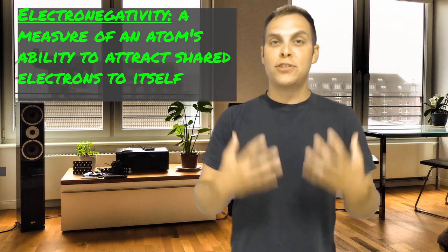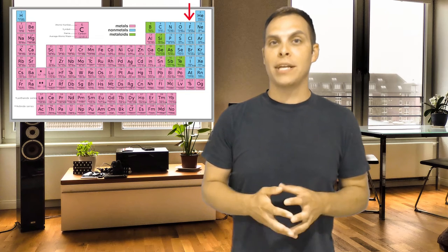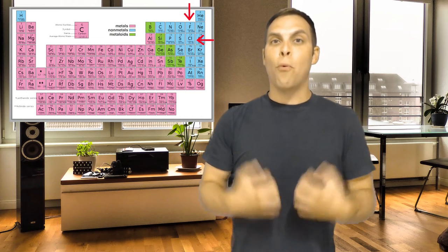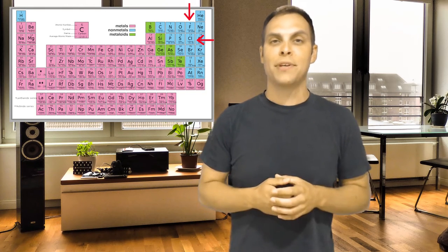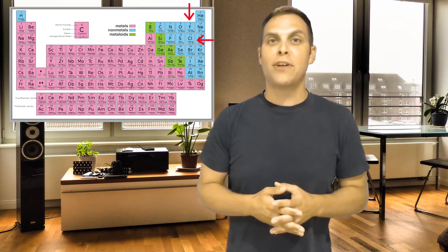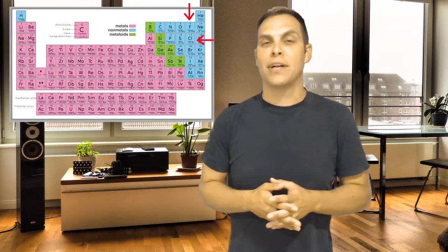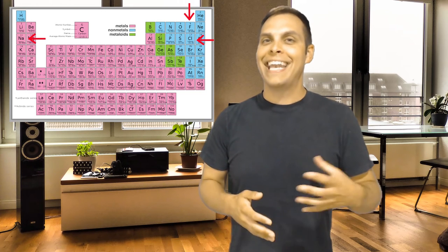Now, you have some atoms, like fluorine or chlorine, that really, really want more electrons. Those are what we call highly electronegative atoms. And then you have others that don't want new electrons at all. In fact, they want to give away their electrons. They have very low electronegativity. These are things like sodium and lithium.